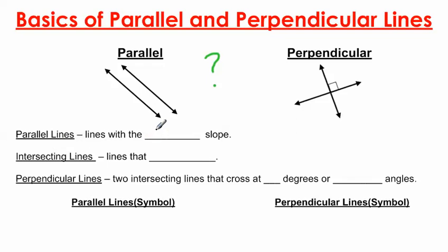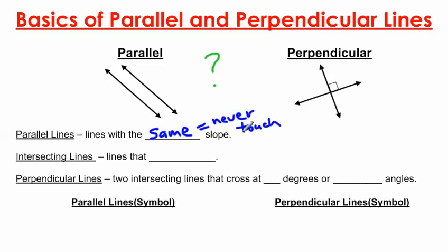Parallel lines are lines with the same slope. These two lines are parallel to each other because they have the same slope, and having the same slope means they're never going to touch — they will never cross paths. When I think of parallel lines in the real world, I think of railroad tracks, or the boards on fences that go straight up and down or left and right.